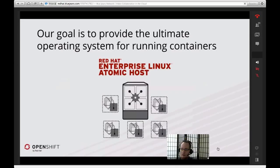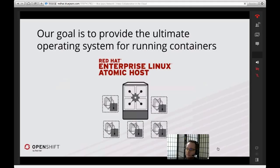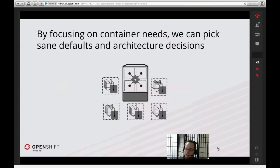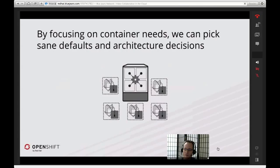Our goal with Atomic is to provide the ultimate operating system to run containers on — that's really what we're focused on. We have Red Hat Enterprise Linux Atomic Hosts as our supported offering for production environments, and I'd also mention the community versions for CentOS and Fedora. The real key thing is that by focusing on the needs of a container, we can pick some really sane defaults and make architectural decisions for deploying these hosts.